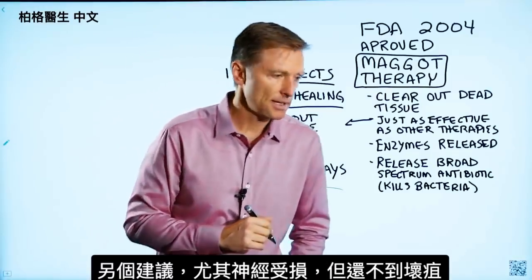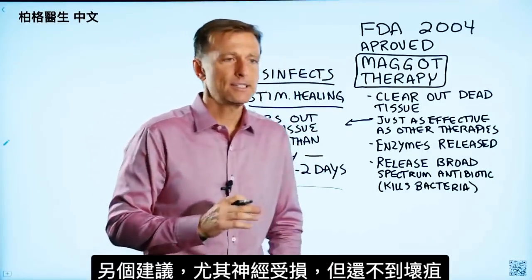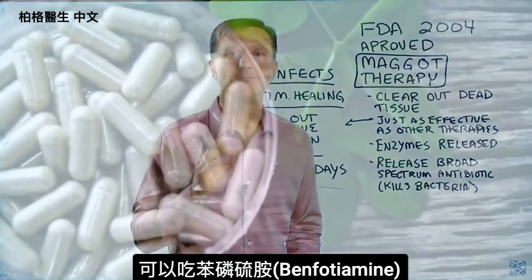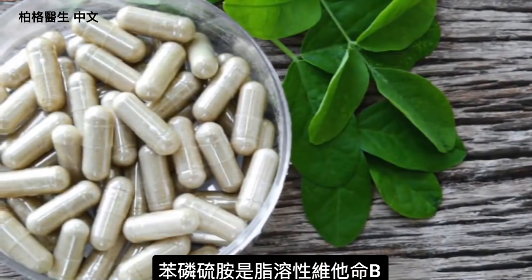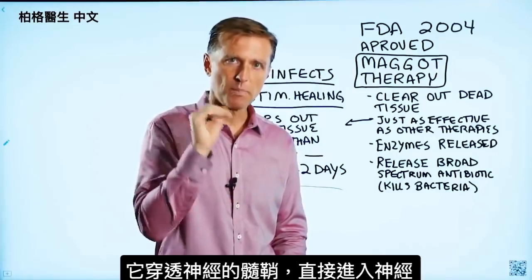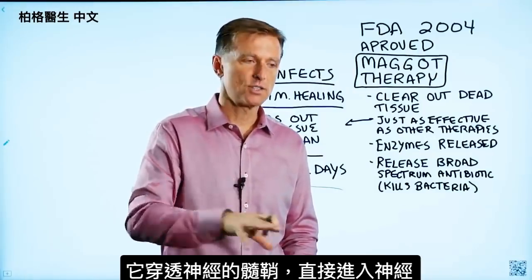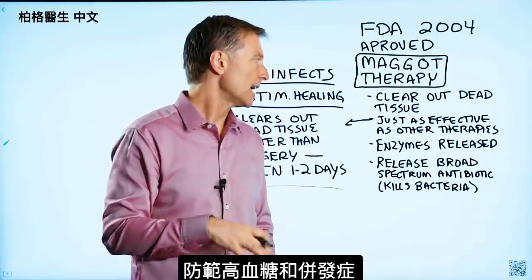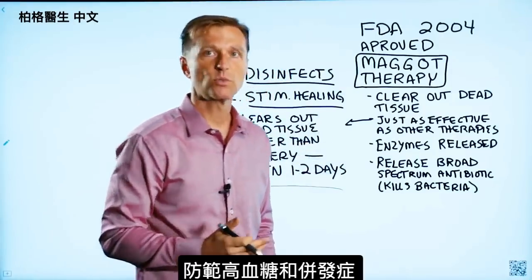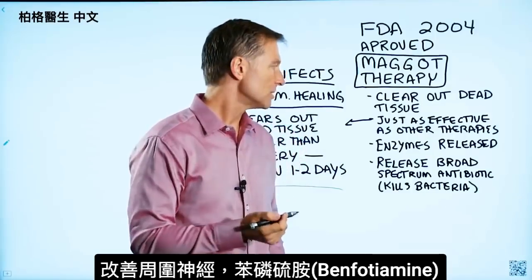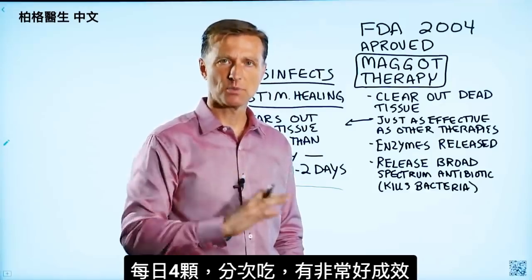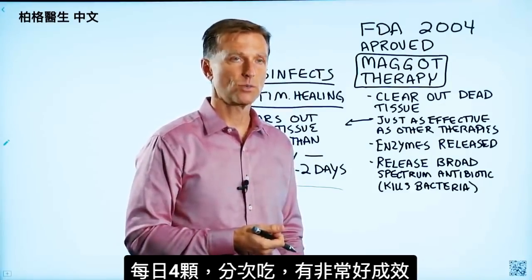The other thing I would recommend, especially if you're getting nerve damage but maybe it's not gangrene yet, is to start taking benfotiamine. Benfotiamine is a B vitamin that is made into a fat-soluble version, so it penetrates the myelin sheath. It goes right into the nerves and can actually help to protect against the high sugar and the complications. It's great for peripheral neuropathy. Take about four tablets a day, spread out, and you'll see some really wonderful changes with that.